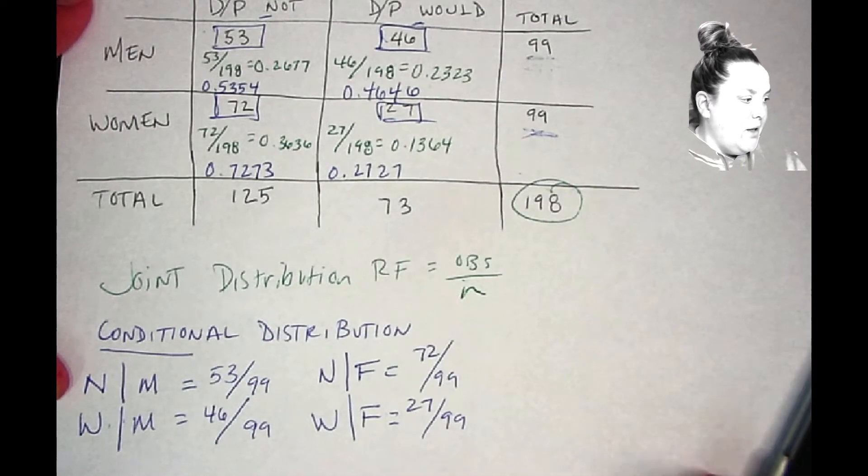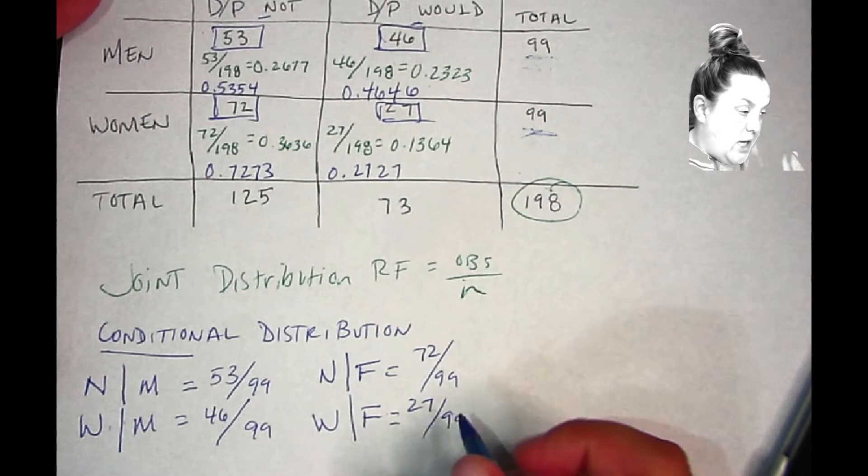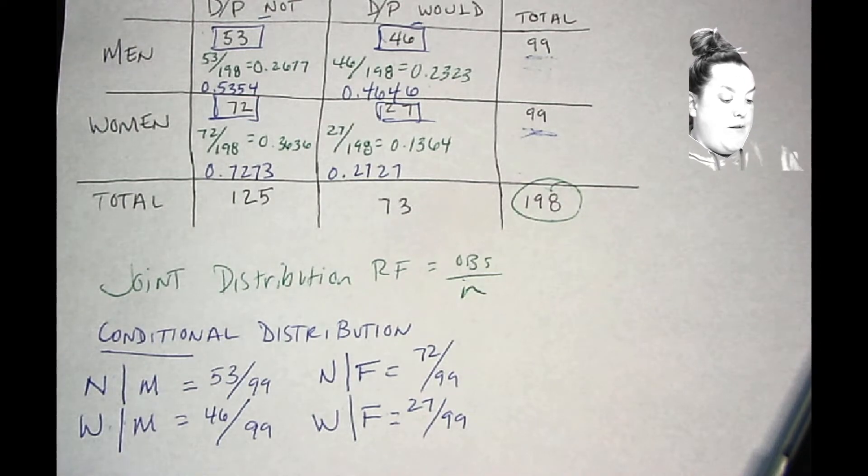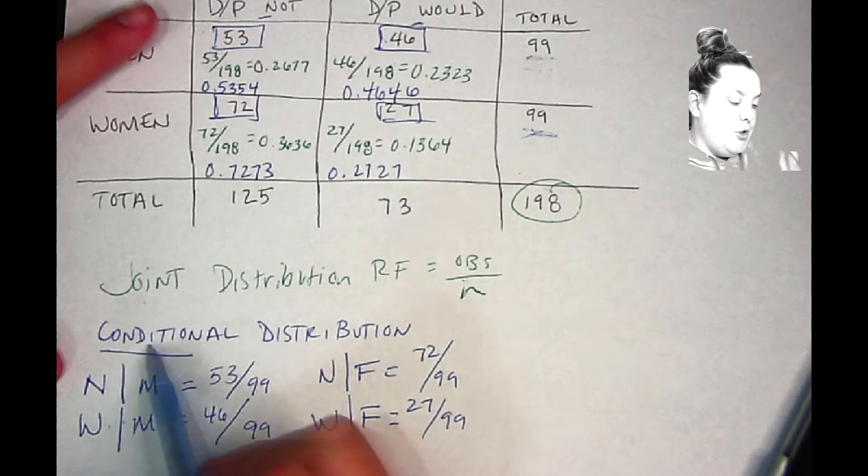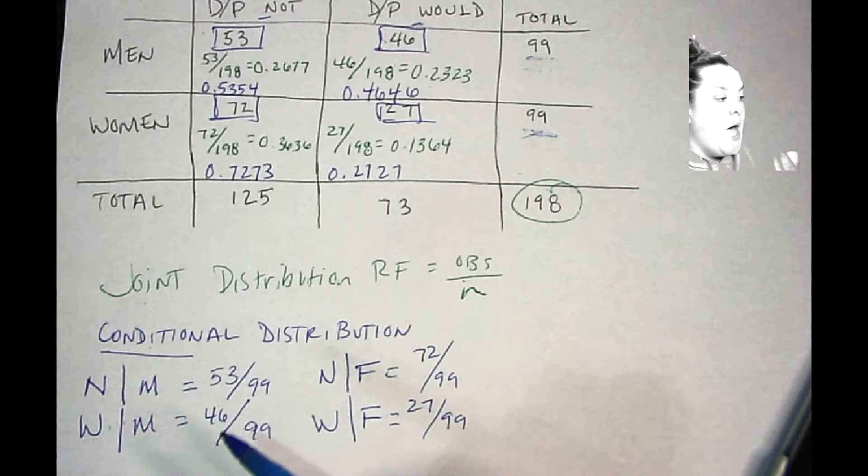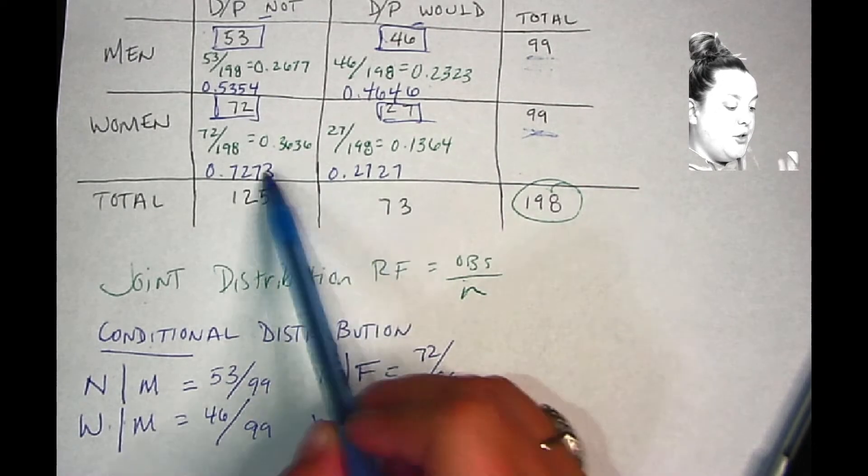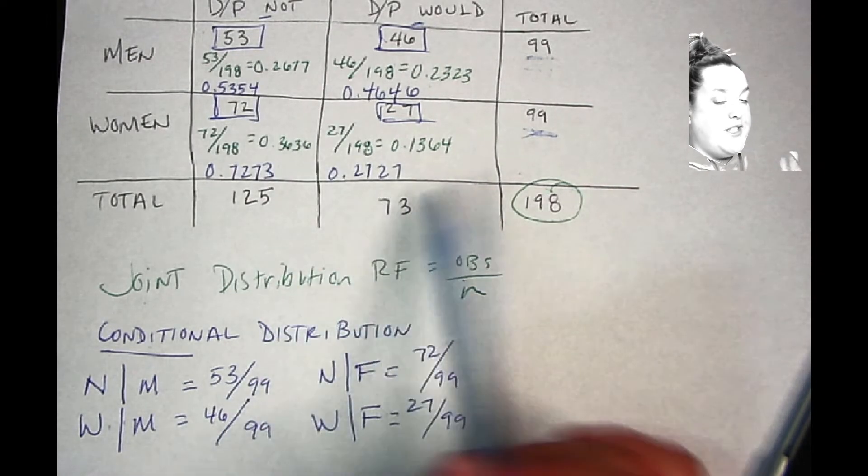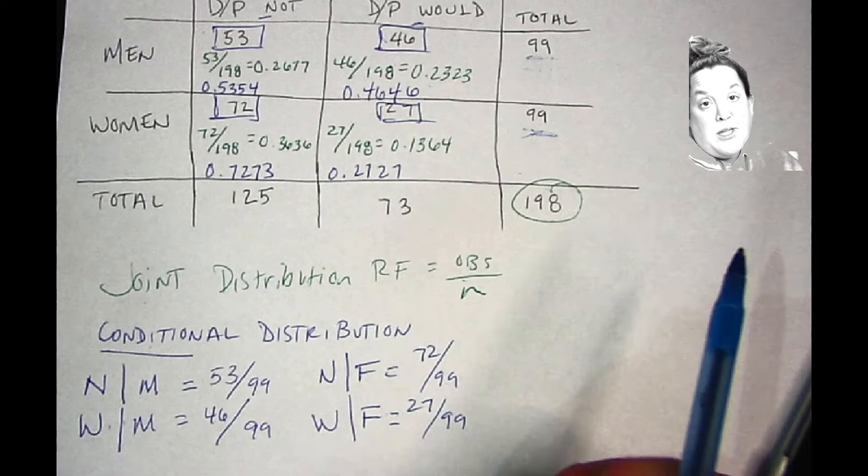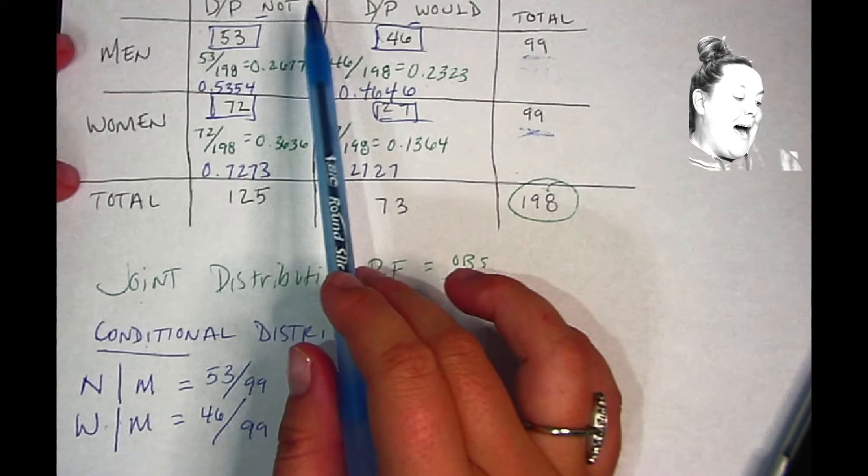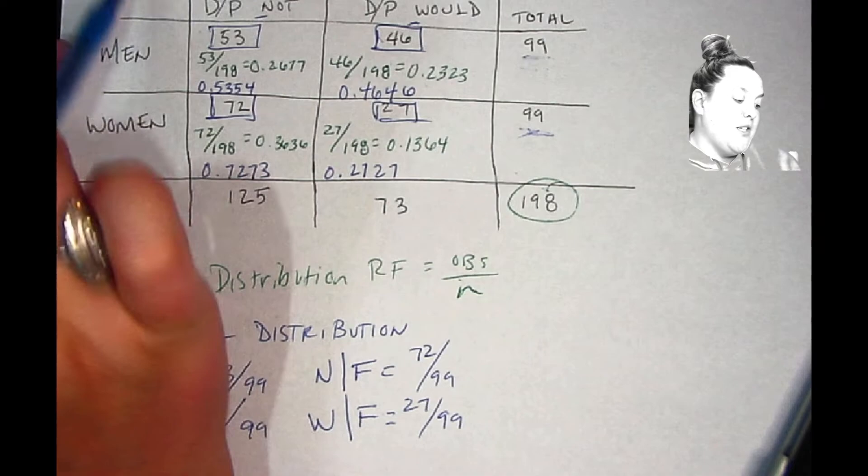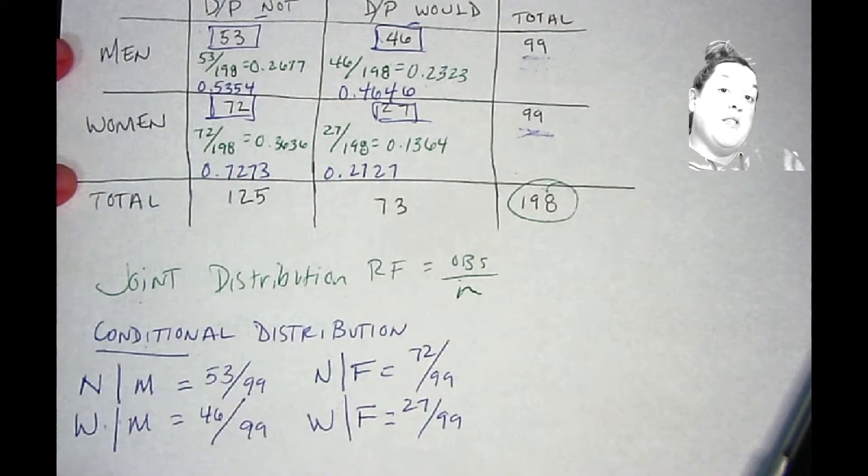Now here is something that's different. If you saw my first two videos looking at the joint distribution and conditional distribution, I talked about how if those conditional values are very similar or approximately the same, that means that there's probably not a relationship between your explanatory and response variable. And that was the case for the last set of data that we looked at.